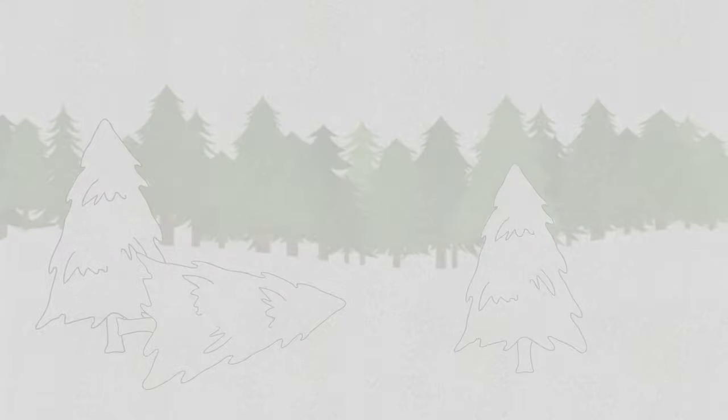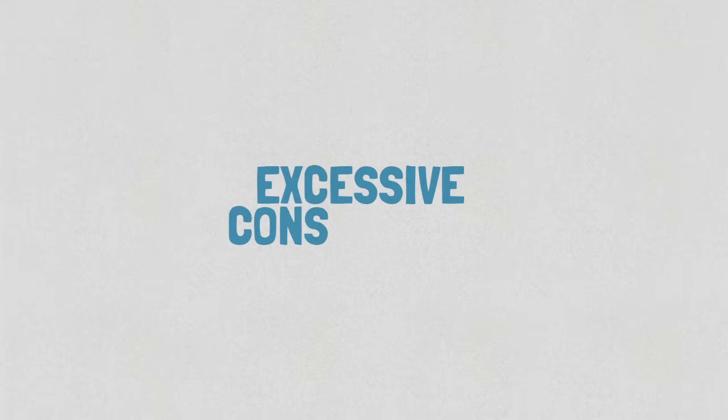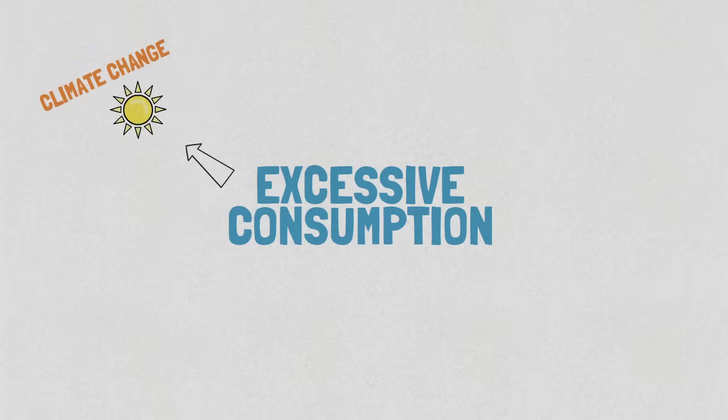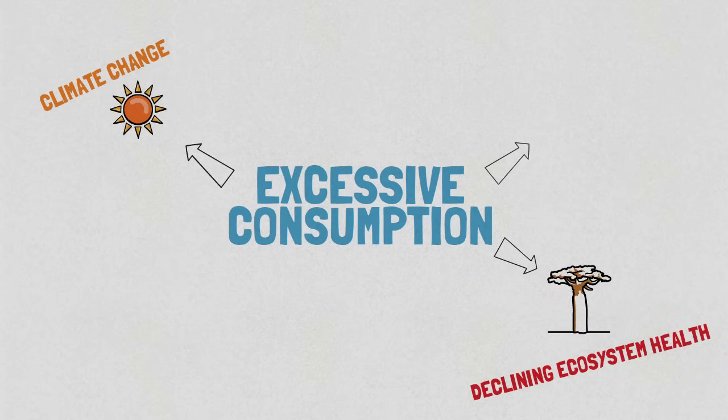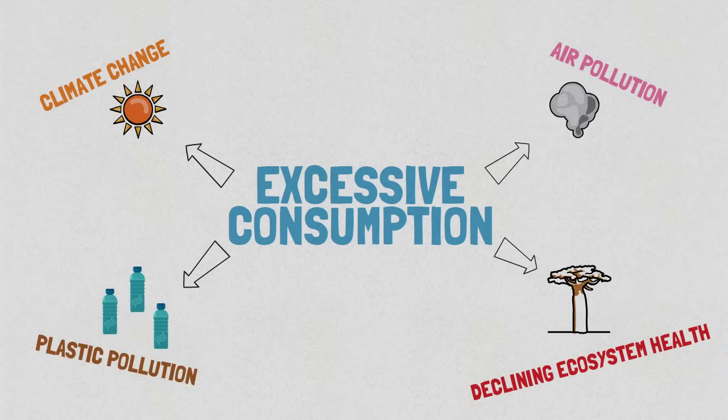We're seeing fisheries disappearing and other ocean life. We're seeing forests disappearing. Everyone is familiar with the impacts of climate change and other impacts of this level of consumption, plastics in the ocean, all of these problems.